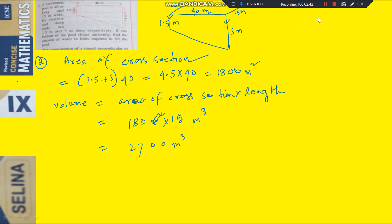But in the question it is told, the answer you have to find in liter. You have to find the amount of water in liters to fill the pool. So, 1 meter cube equal to how many liters? Who can tell? 1 meter cube equal to how many liters?